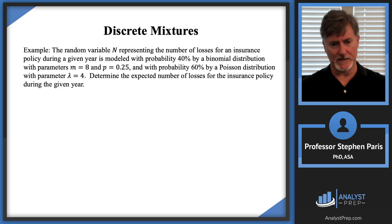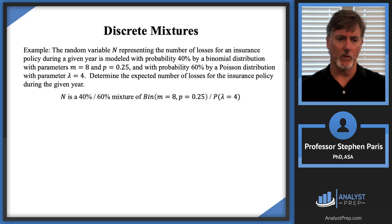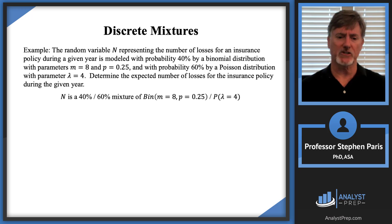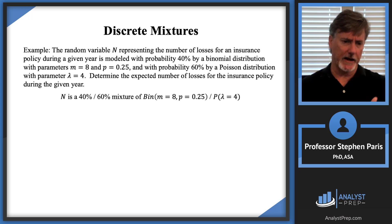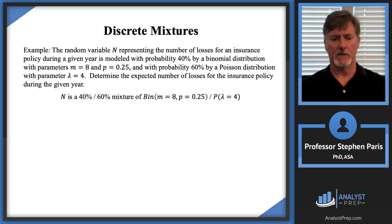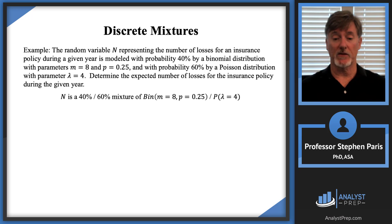This is exactly the type of situation I mean by a discrete mixture. N is a 40%-60% mixture of a binomial distribution with the given parameters and a Poisson distribution with the given parameter. There's a 40% probability that N is binomial and a 60% probability that N is Poisson. That's the mixture.